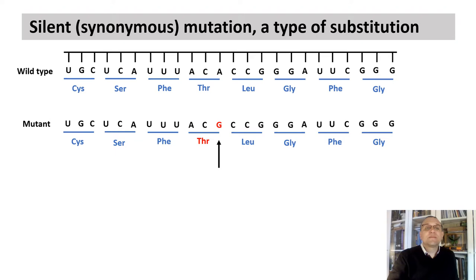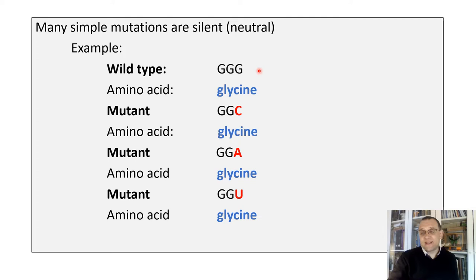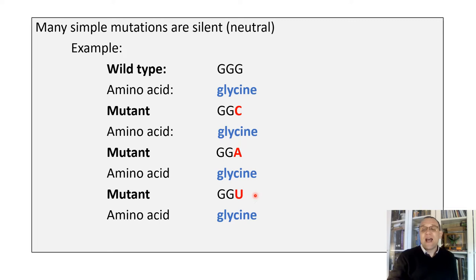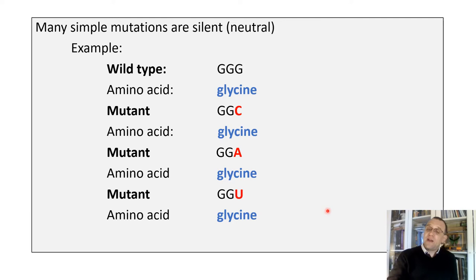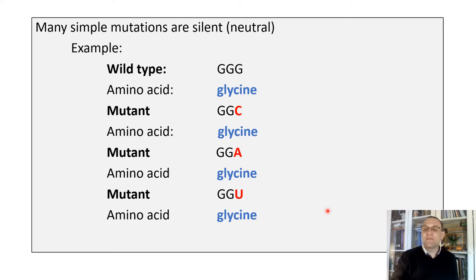Here is an example with another amino acid, glycine. GGG codes for glycine, but if a substitution occurs and instead of G an A or U is inserted, we still end up with glycine. Because of this, the rate of mutations is actually slowed down. There may be an evolutionary meaning here — reducing the amount of mutations in certain species. Non-synonymous mutations are very important for species to change over time.